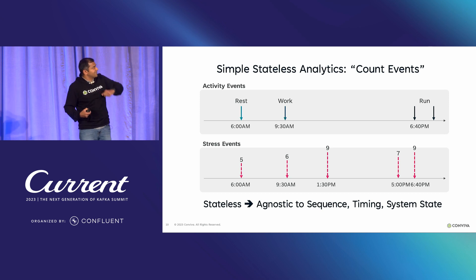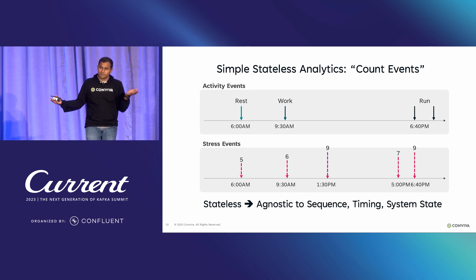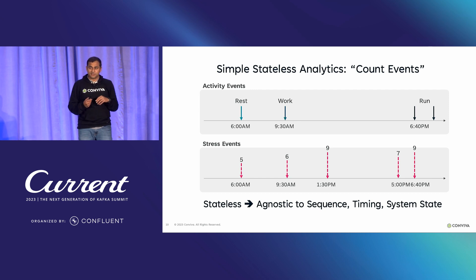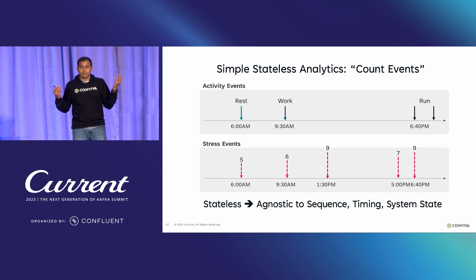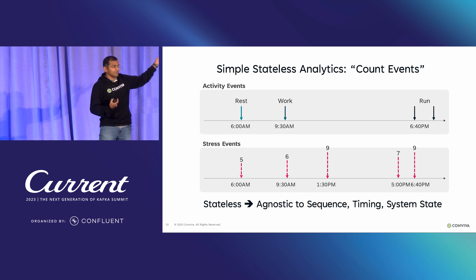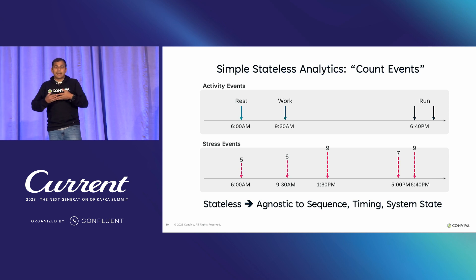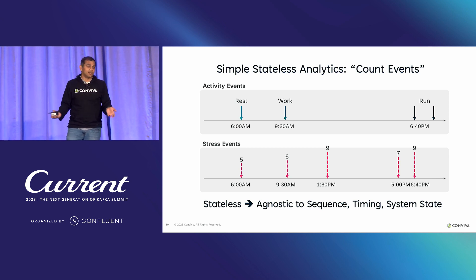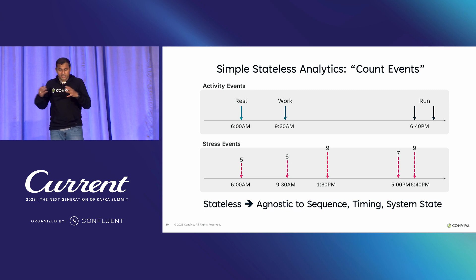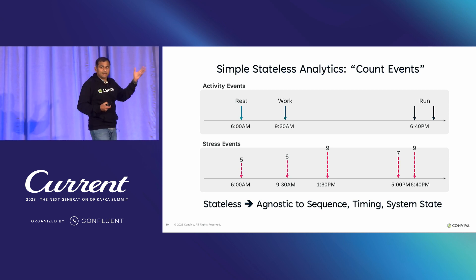Stateless analytics are agnostic or independent of the sequence, timing, and system state in which events happen. For example, if I'm counting the number of activity events, I can permute those events — work before rest or rest after run — and the count remains the same. I can change the time between events, and I'll still get the same answer. The sequence, order, and timing don't matter. These are the simple stateless analytics you can do in a spreadsheet or with SQL — classical tabular analytics.